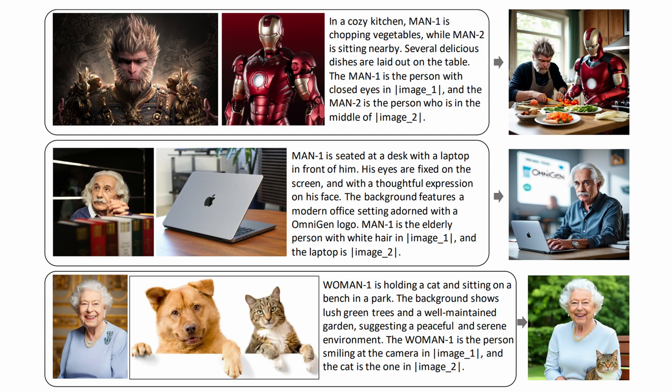Another thing they promise is knowledge transfer, which is a huge step into the future. Right now, when you create an image with Stable Diffusion or Flux, every image generation is its own task — it is not connected with each other. The models can't access the history of these tasks. You can't say, 'do it a little bit brighter, or have less people in the background but make the same image.' OmniGen explores this ability of knowledge transfer across different tasks and aims to learn within a unified format instead of splitting tasks into different models.